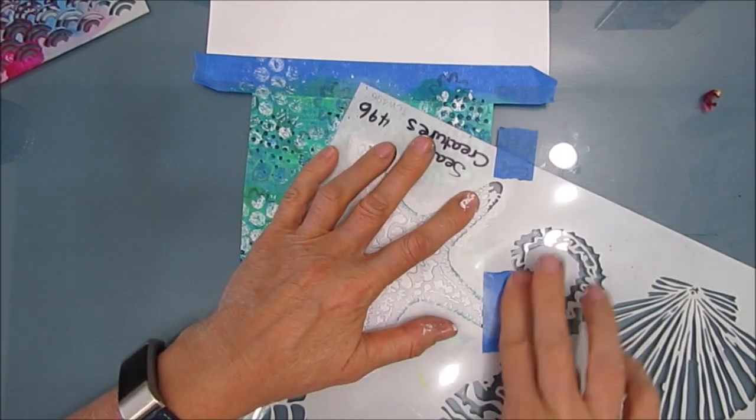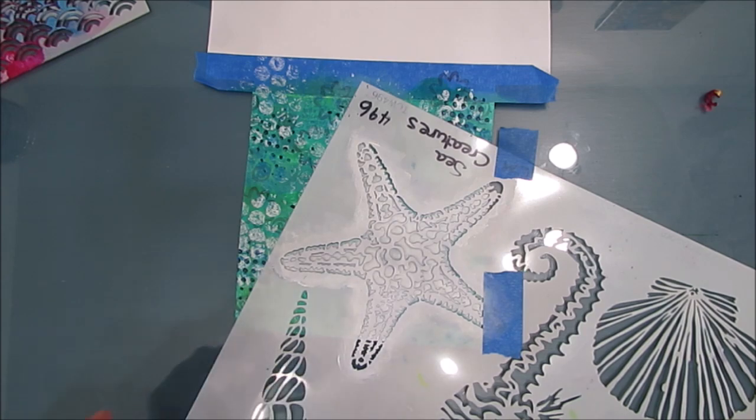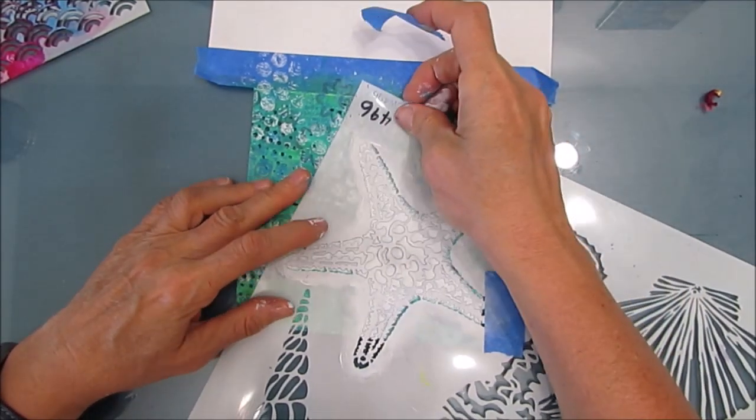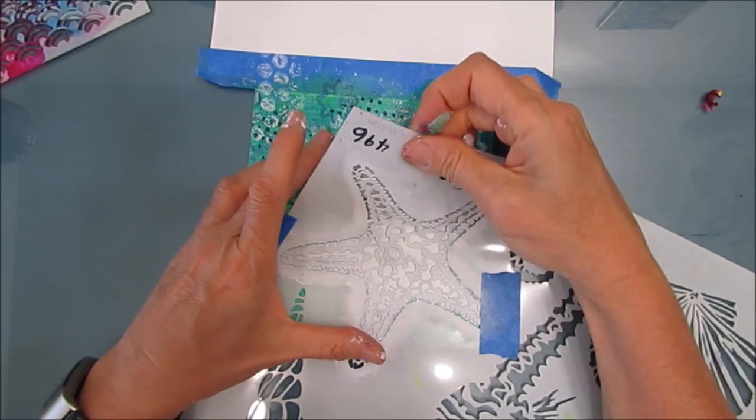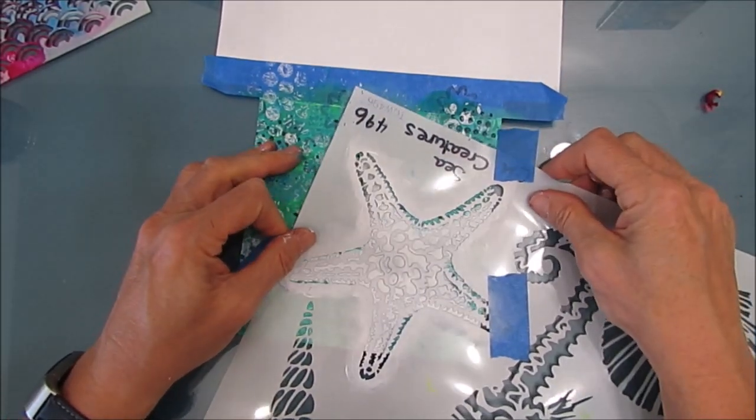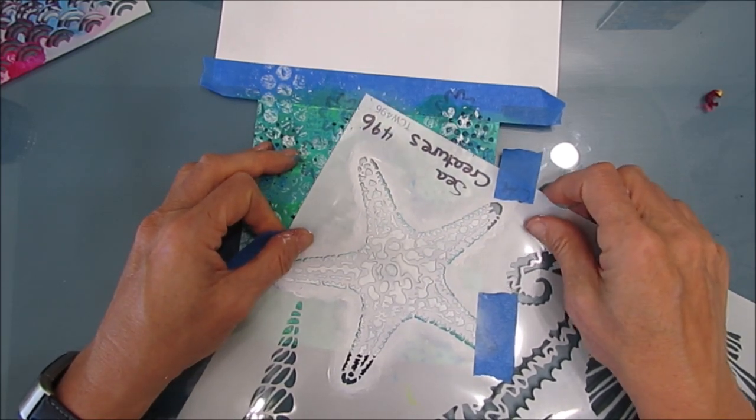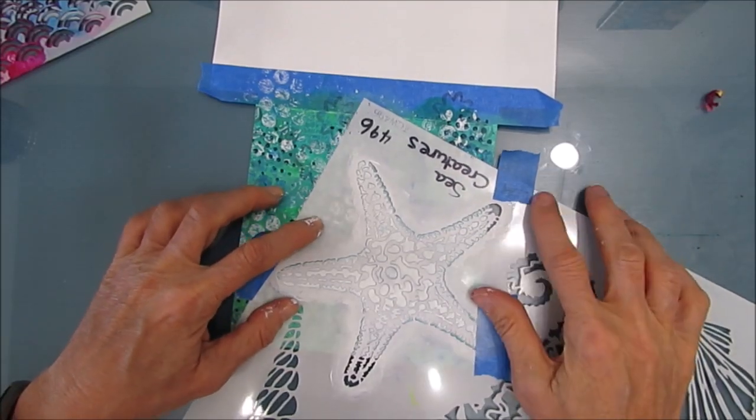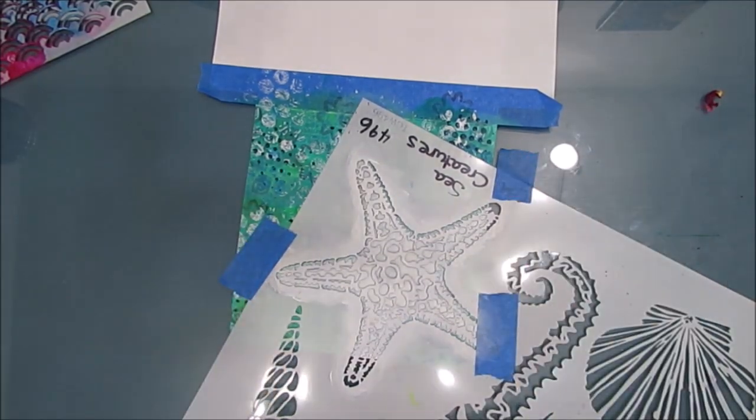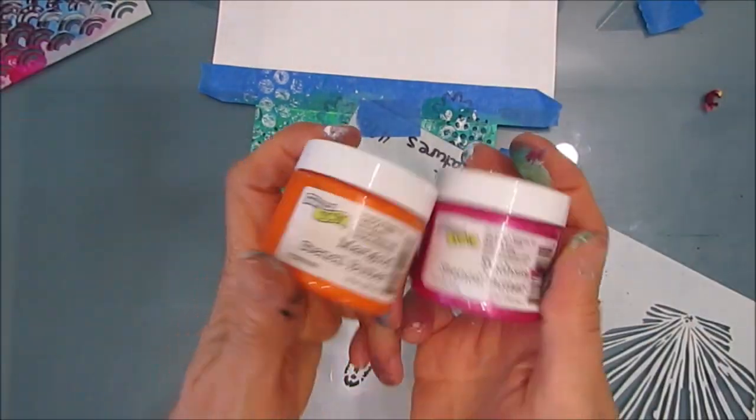I'm putting the stencil back in place, taping it down, which is always a good idea when you're using modeling paste or stencil butters, especially if it's a focal image because you want it a little more precise. If I'm doing stenciling for a background I don't care so much if it's perfect, but I want this pretty good.